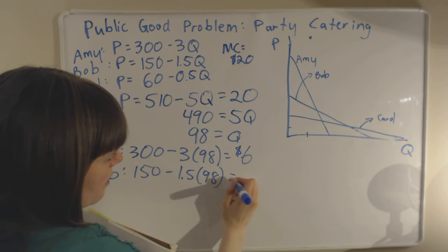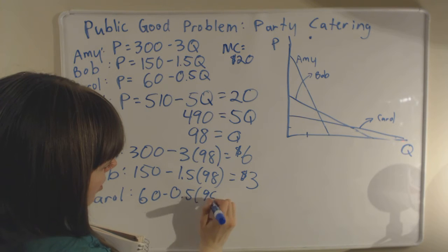Bob's price is going to be 150 minus 1.5 times 98, our quantity. So Bob's price will be $3, and Carol's price is going to be 60 minus 0.5 times our quantity, which is going to be equal $11.